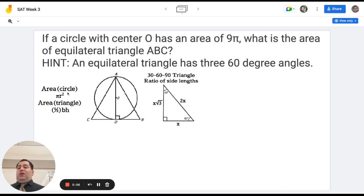They also give us the area of a circle, πr², and the area of a triangle, half the base times height. Both of these equations are on the SAT, PSAT reference sheet. And they also give us the ratios of side lengths for a 30-60-90 triangle. This is also on the reference sheet for SAT and PSAT.